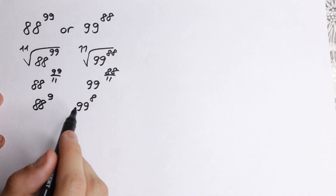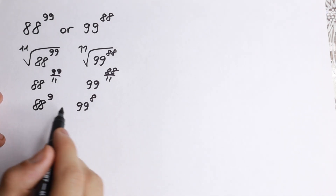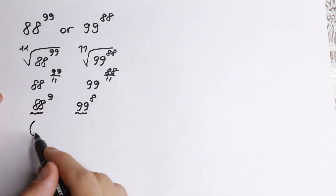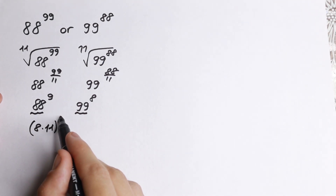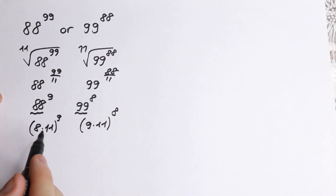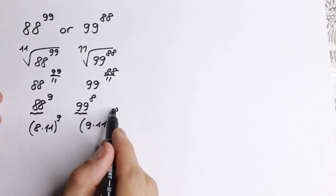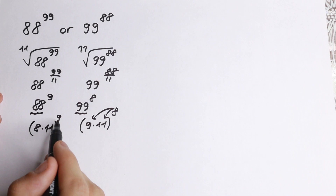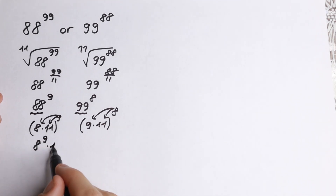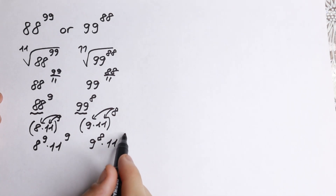So we have this situation — what do we do next? The exponents 9 and 8 are odd and even, so we can't directly compare them yet. But we can simplify 88 and 99 further. We write 88 as 8 times 11, so we get (8×11) to the 9th power, and 99 as 9 times 11, giving (9×11) to the 8th power. Expanding: 8 to the 9th times 11 to the 9th, versus 9 to the 8th times 11 to the 8th.